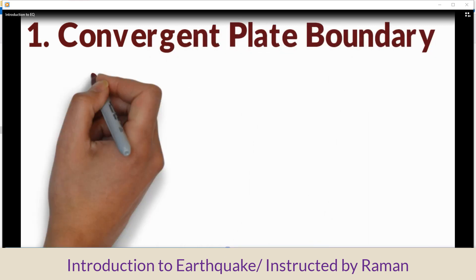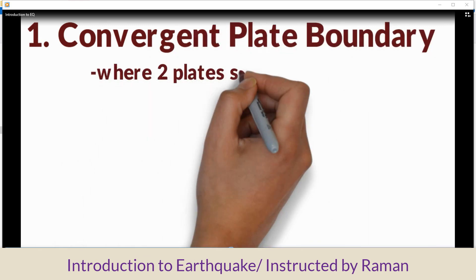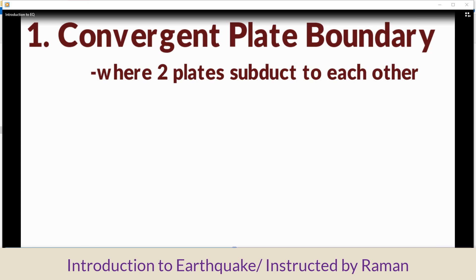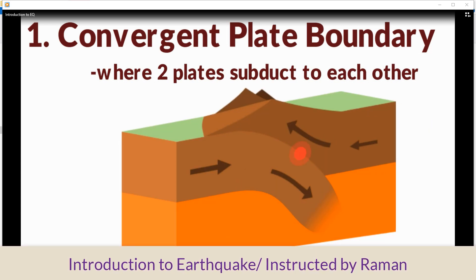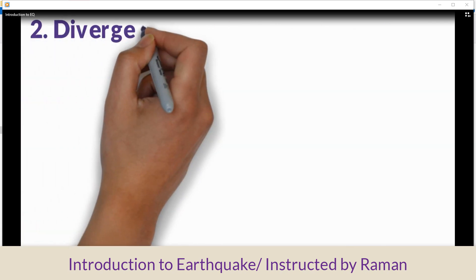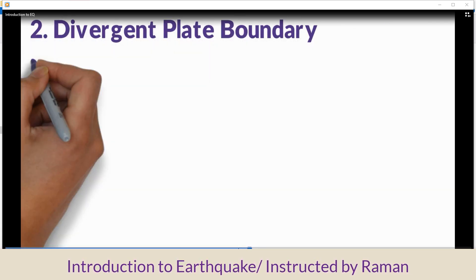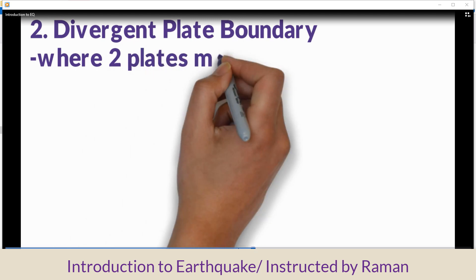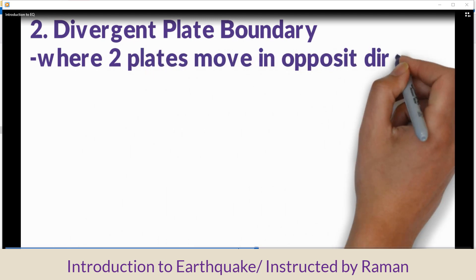Convergent plate boundary is where two plates converge or move toward each other. Divergent plate boundary is where two plates move in opposite directions.